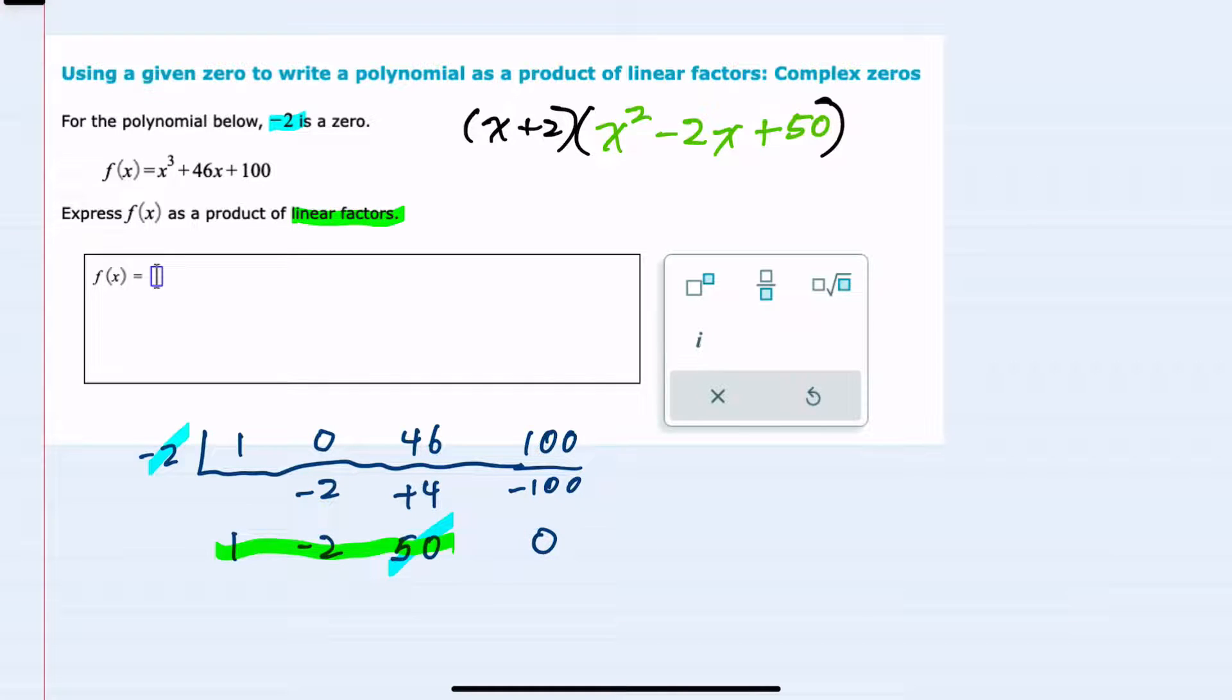However, that second part, the one that I have here in green, still needs to be broken down further. So to find those zeros, I can use the quadratic formula.